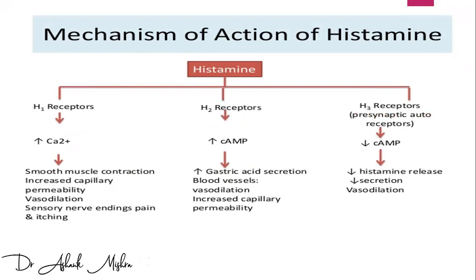Histamine acts in our body through three receptors: H1, H2, and H3. H2 receptors are especially on the GIT, which actually increases gastric acid secretions because of vasodilatation of vessels and increased permeability. H1 receptors will increase calcium influx and lead to smooth muscle contractions.